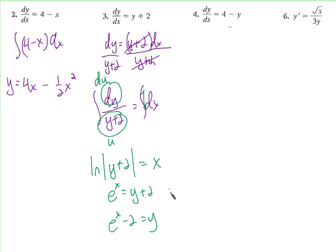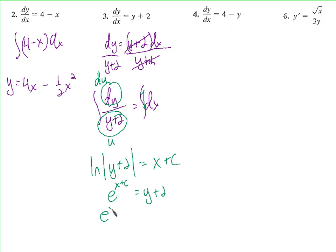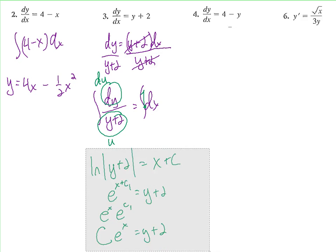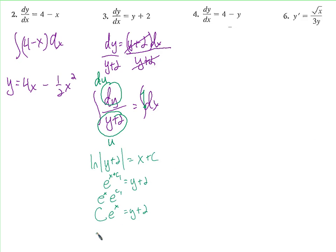The only thing we forgot is the plus C. So it's e to the (x plus C). Remember that e to the (x+C) is the same as e to the x times e to the C — that's why we add exponents when multiplying same-base terms. We call e to the C just the constant C, so C times e to the x equals y plus 2, giving us y equals C·e^x minus 2.